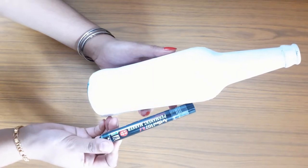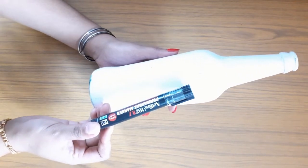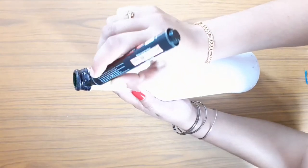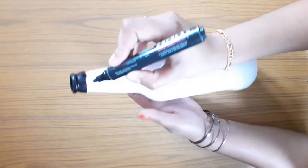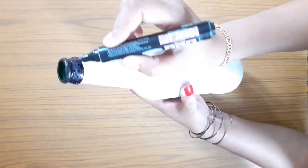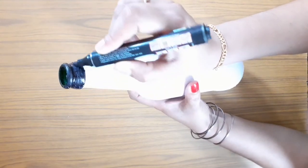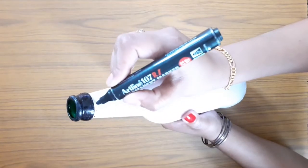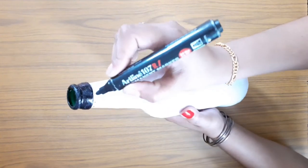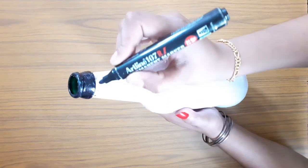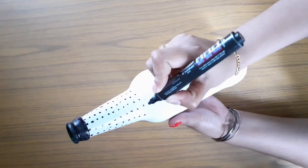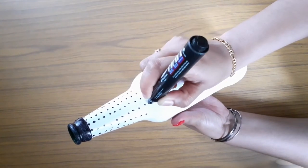This is a black color marker. I am going to use it on the bottle to do the dots. Lay out the dots. Now I'm going to continue with the dots.